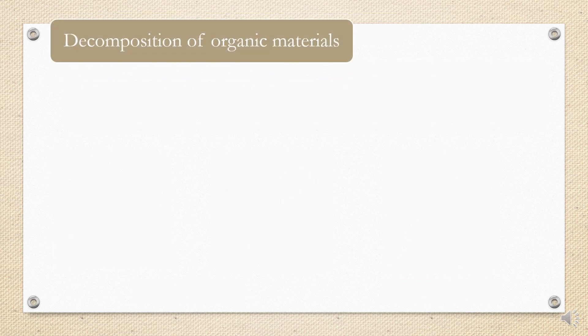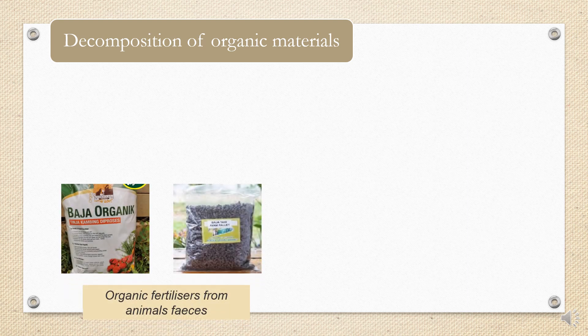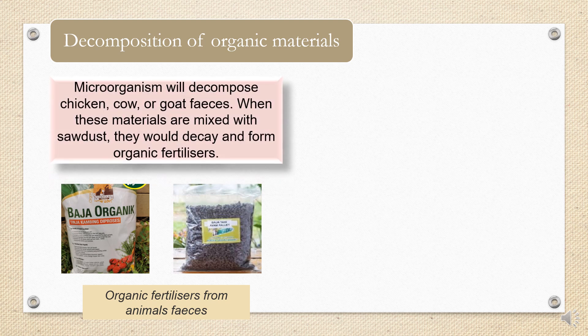Next, decomposition of organic materials. Organic materials is something that can be decomposed. When you put it at one place, after a certain time it will decompose. Microorganisms can help to decompose organic materials. For example, microorganisms can help to decompose chicken, cow, and goat feces. When these materials are mixed with sawdust, they will decay and form organic fertilizer. So you can use this as organic fertilizer.